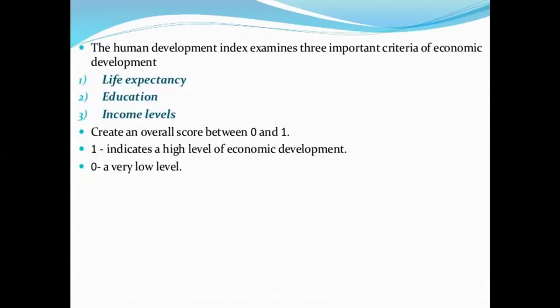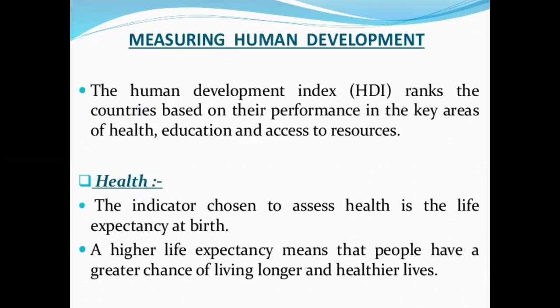The Human Development Index exam covers three important criteria: Life Expectancy, Education, and Income Levels. The score ranges from 0 to 1 — a score closer to 1 indicates a high level of human development, while a score closer to 0 indicates a very low level. In terms of the HDI, countries are ranked from their performance in key areas: Health, Education, and Access.